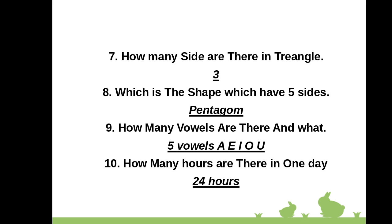Question 8: Which shape has 5 sides? Answer: Pentagon. Question 9: How many vowels are there, and what are they? There are 5 vowels: A, E, I, O, U.